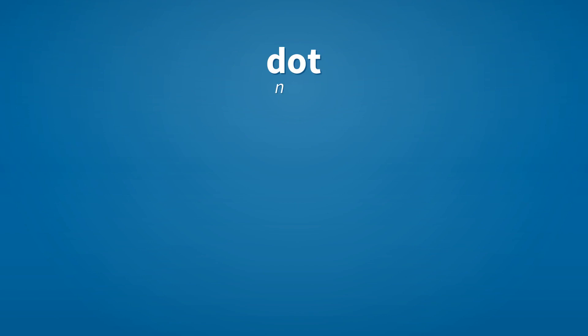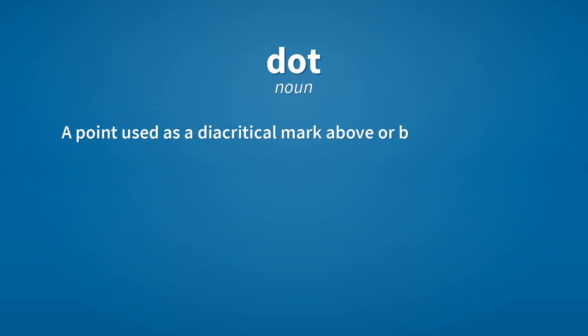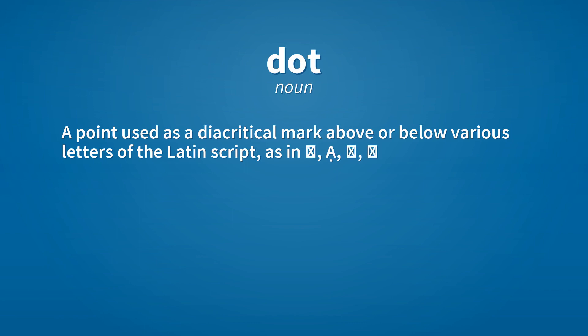Noun. A small spot. A dot of color. Noun. A point used as a diacritical mark above or below various letters of the Latin script, as in Ȧ, Ạ, Ḃ, Ḅ, Ċ.